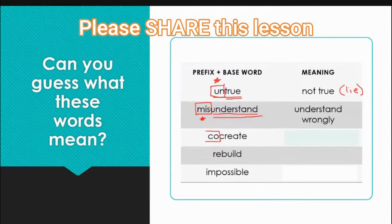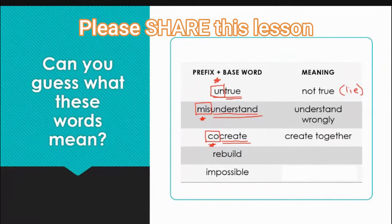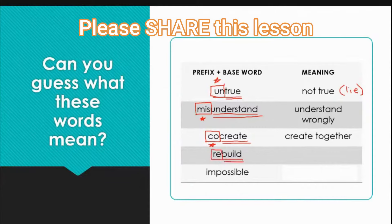Let's look at 'co-create.' We have our prefix 'co' and our base word 'create.' Co means together or with, so to co-create means to create together. Let's say I am working on a new song and my friend and I make it together — we could say we co-created the song, we created it together. Next, 'rebuild' — we have prefix 're' and base word 'build.' Rebuild means to build again. Like with the Ikea furniture, if you make a mistake, you have to rebuild.